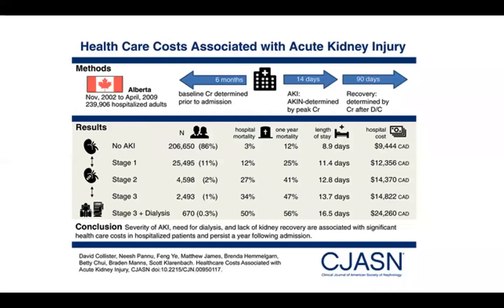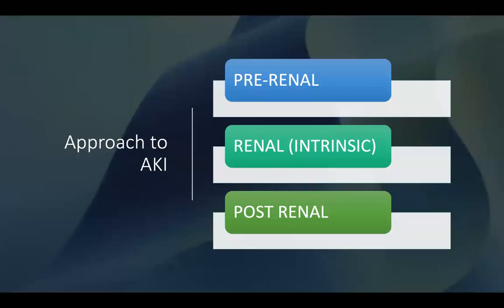This is Calgary data showing the cost associated with AKI from a retrospective review of hospitalized patients. Patients with no AKI had an average hospital cost of almost $10,000. Those with mild AKI had costs around $12,000. Those with more severe AKI saw costs up to $24,000 per admission — a huge financial burden.